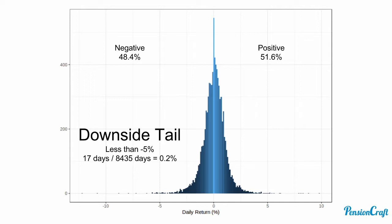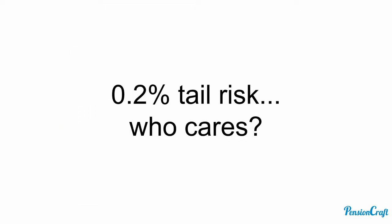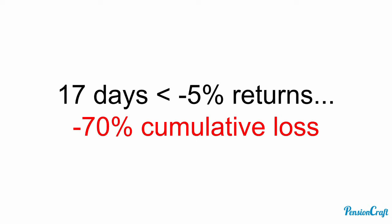But volatility doesn't focus on the downside tail. If we do focus on that and look at days when the FTSE fell by more than 5%, that only happened on 17 days in 30 years, which is just 0.2% of the time. So if the tail risk is just 0.2%, who cares? Well, if we look at the cumulative return over those 17 days, the total loss was 70%. So even though by definition it's very infrequent, tail risk can lose you a lot of money.